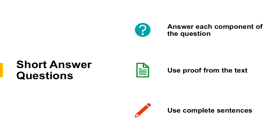Please answer each component of the question. Sometimes in a short answer question, they're asking you to do more than one thing. For example, you might see: "Explain your answer using information from this selection and your own ideas." In that statement, they are asking you to do two things: use proof from the text, and use your own ideas. Make sure you're answering every part of the question. You can even use your highlighting tool to help identify the different parts.